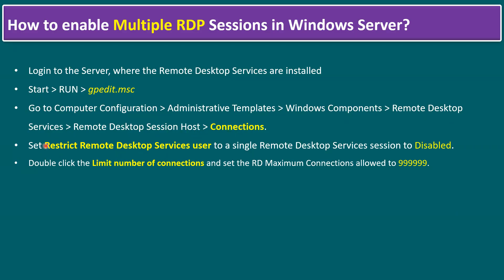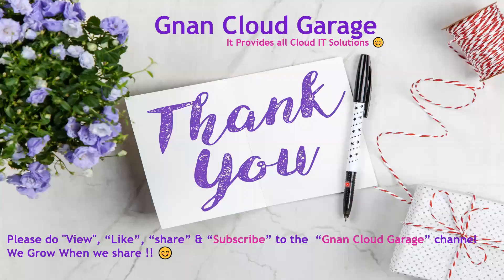To recap: log into the server where Remote Desktop Services are installed, go to Start > Run > gpedit.msc, navigate to Computer Configuration > Administrative Templates > Windows Components > Remote Desktop Services > Remote Desktop Session Host > Connections. Set 'Restrict Remote Desktop Services user to a single session' to Disabled, and set 'Limit Number of Connections' to your desired maximum. We tested successfully with Admin1 and Admin2 both logged in simultaneously. This procedure applies to any Windows Server edition. Thank you — if watching for the first time, please like, share, and subscribe to the Gnan Cloud Garage channel.